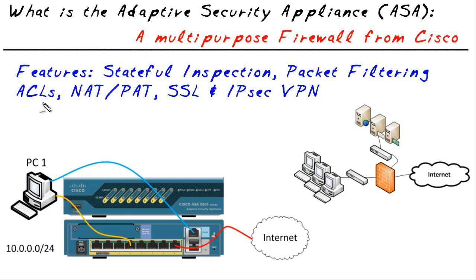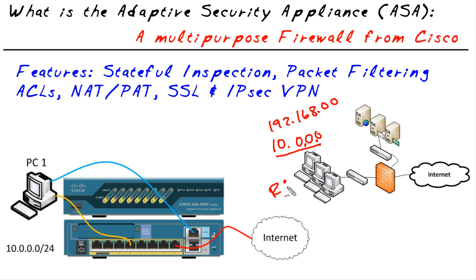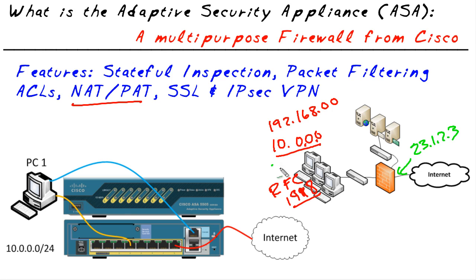Another feature: customers typically use the 10 network — for example, 10.0.0.x. If you check your IP address right now with ipconfig on Windows or ifconfig on Linux or Mac, you likely have a 10 address or a 192.168.x address. Those addresses are in the RFC 1918 address space — they're private and not allowed on the internet; service providers block them. So we also have NAT and PAT, which is simply lying about our source IP addresses. If the firewall has a globally routable address like 23.1.2.3, it uses NAT or PAT to translate the source addresses of internal PCs into that address as it ships traffic onto the network, and the reply traffic is un-translated when it comes back.